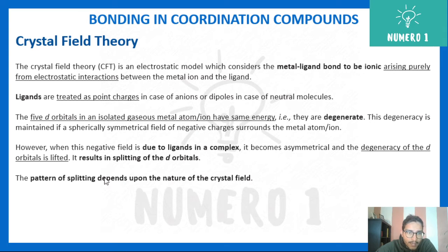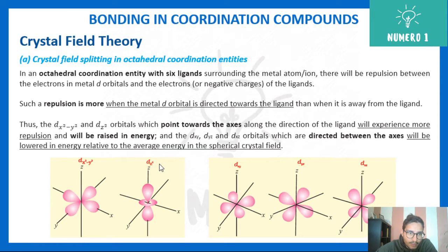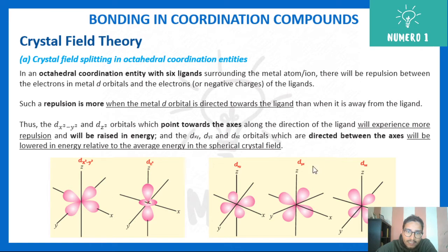The pattern of splitting depends on the nature of the crystal field created by the incoming ligand. The d orbitals include dx²-y² and dz², which point towards the axes, whereas dxy, dyz, and dxz lie in the xy, yz, and xz planes respectively.